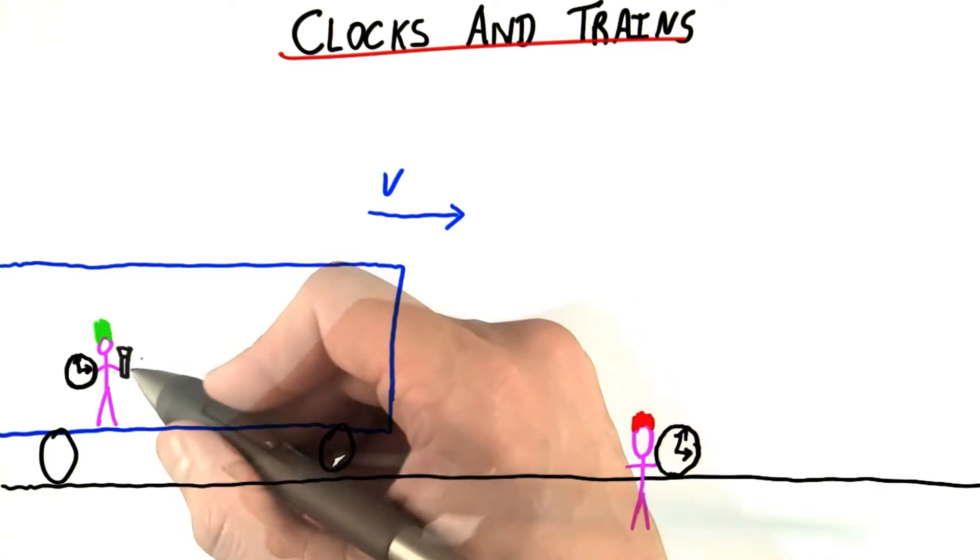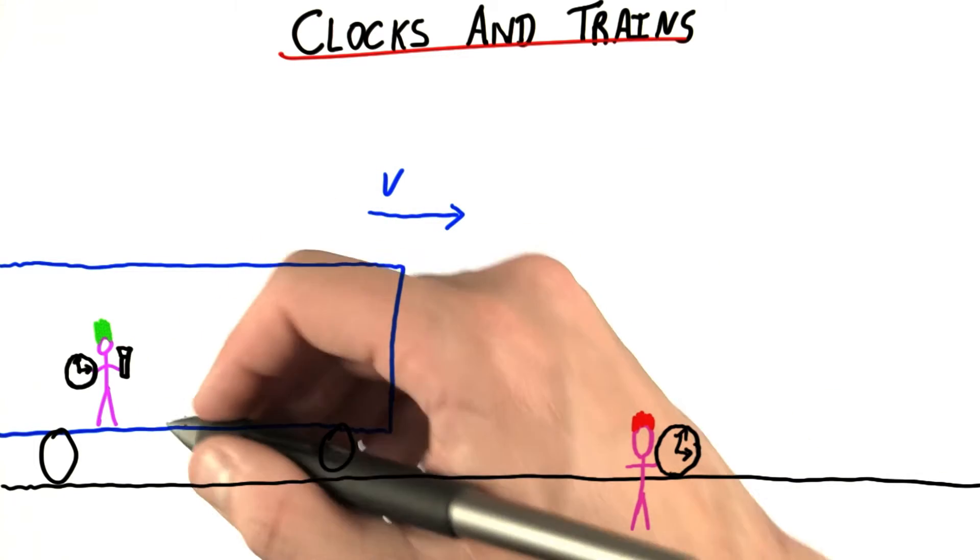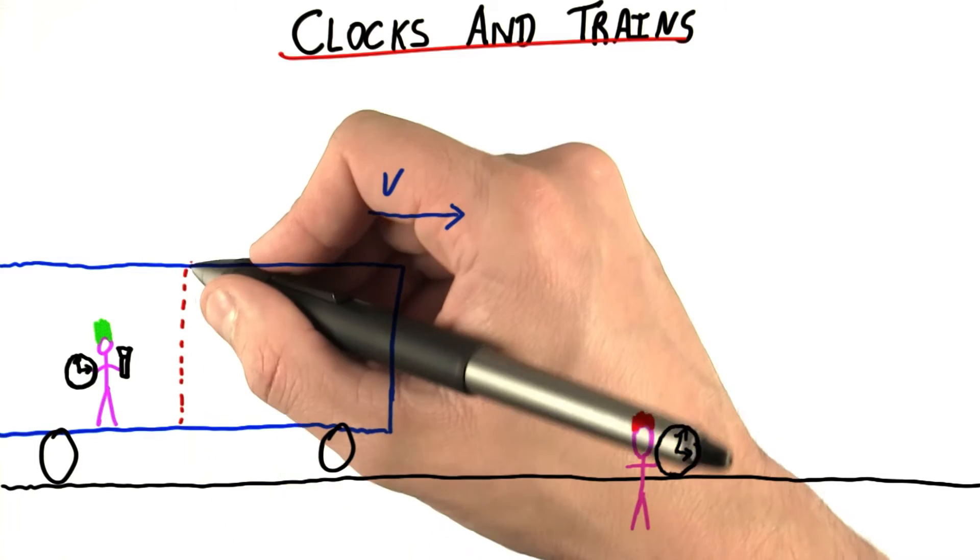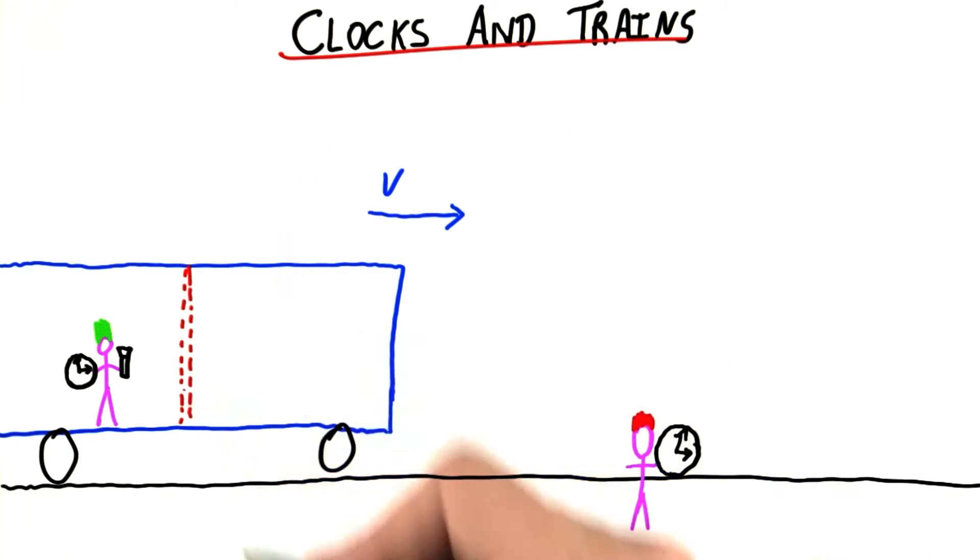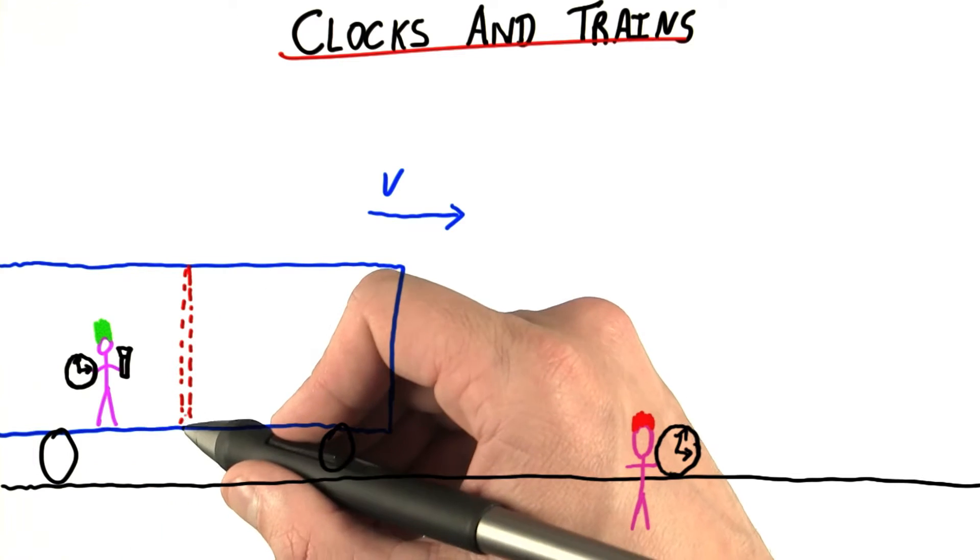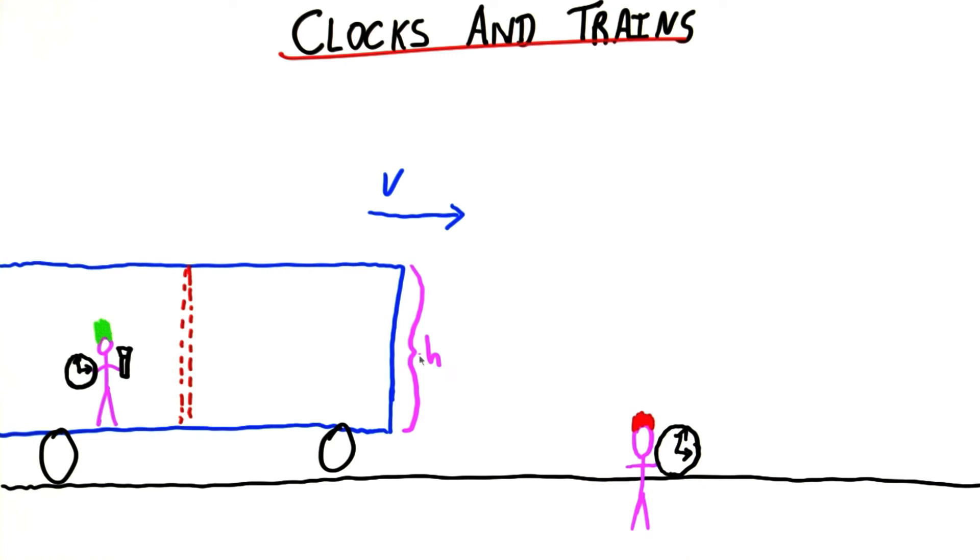She's going to do a little experiment. She's going to take her flashlight and bring it down to ground level. She's going to send a beam of light straight up, so that it bounces off a mirror, and then comes straight back down. She's going to time how long it takes the beam of light to make this round trip. I should mention, the train has a height, we'll call it h.